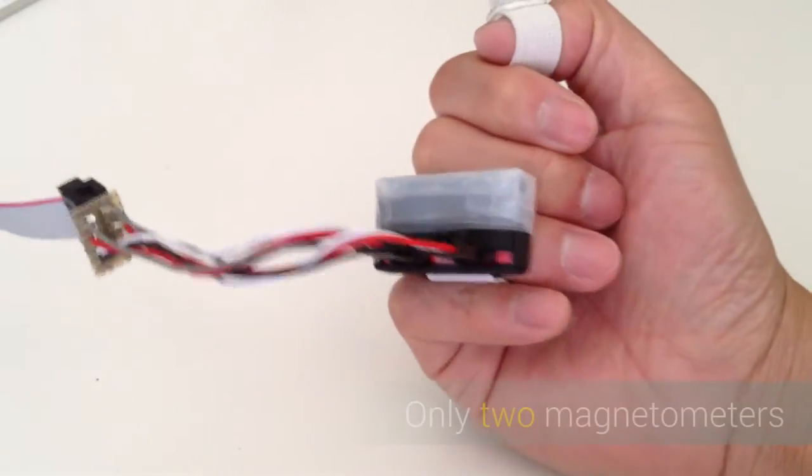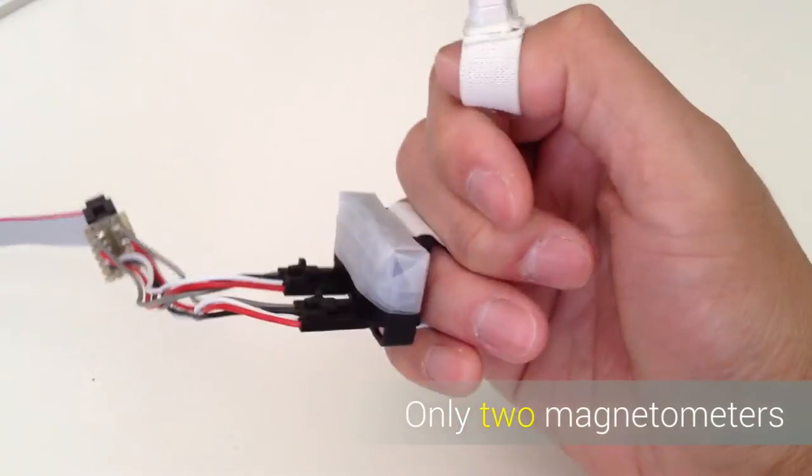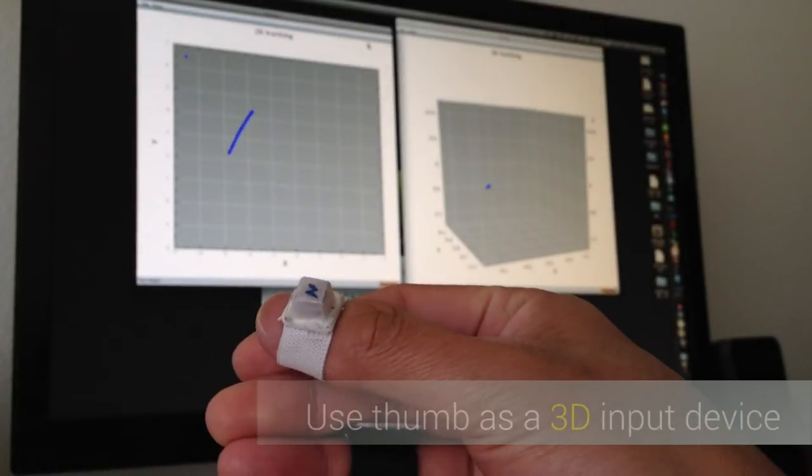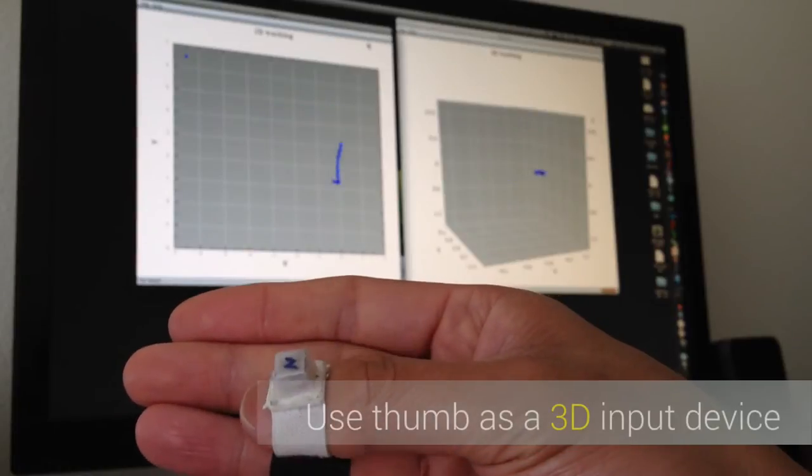Our system enables 3D tracking using one permanent magnet and only two magnetometers. A user attaches the magnet on the back of the thumb and wears a pair of magnetic sensors on the back of their fingers.